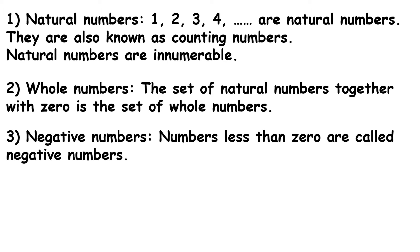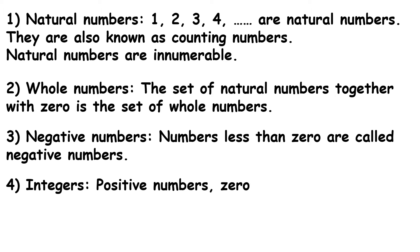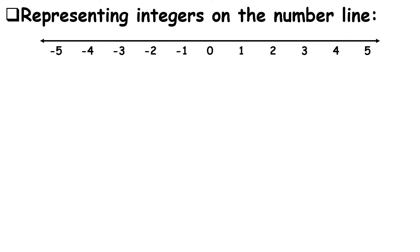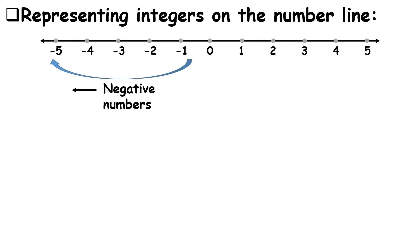The third type of numbers are negative numbers. Numbers less than zero are called negative numbers. Now, what are integers? Positive numbers, zero, and negative numbers together form a group of numbers called the integers.